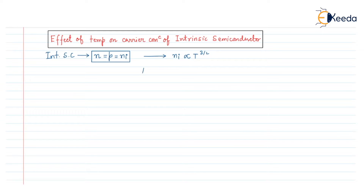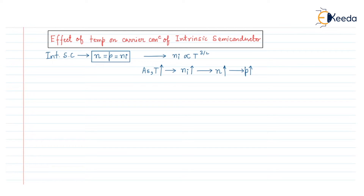As the temperature T increases, the Ni value will increase, which in turn increases the electron concentration as well as the hole concentration. Since N equals P in an intrinsic semiconductor, as temperature is increased, both the electron concentration and hole concentration will increase because the temperature increment causes covalent bonds to be broken in larger amounts.